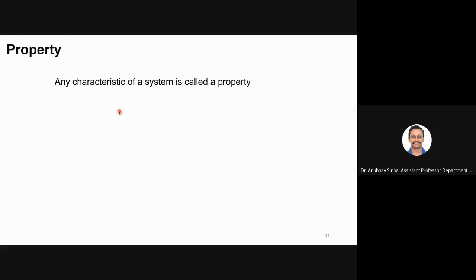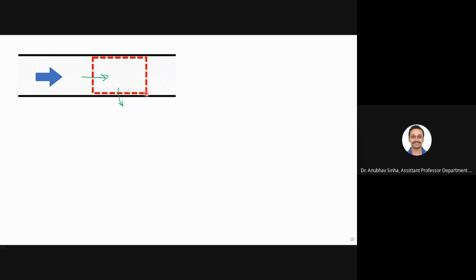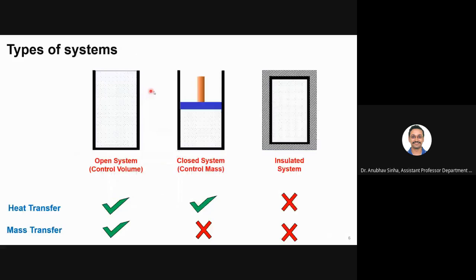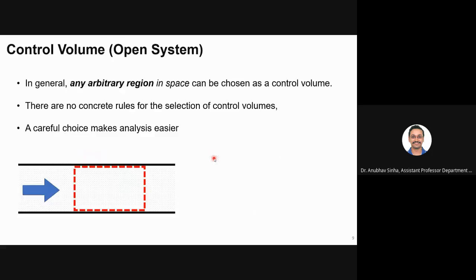A student asks why it is called a control volume. The answer is: 'control mass' means the mass is under control; 'control volume' means you have defined a region — the volume is under control. In a control volume, you don't have control over how much mass will enter or go out. You have just defined that volume. It is just a convention.